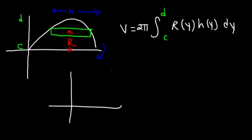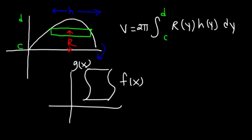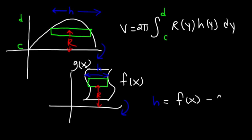Now let's say we have two functions f and g, where the function on the right is f and the one on the left is g, and we're going to rotate about the x-axis. We draw the rectangle parallel to the x-axis. This is going to be the radius, and here we have the height. The height is going to be equal to the function on the right, f(x), minus the function on the left, g(x). And that's how you find h.